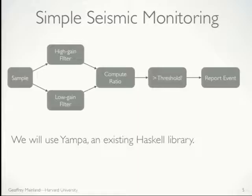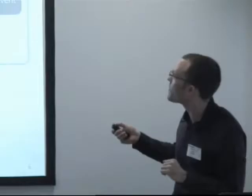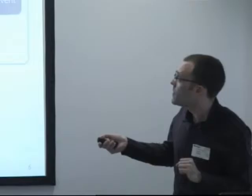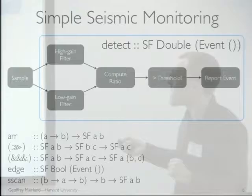I'm going to program this in Haskell, forgetting the constraints that we have on the devices in the volcano, and say in an ideal world, how can I program this at a very high level? I'm going to use an existing Haskell library that has nice facilities for signal processing. I'll write a function called detect. The type says it's going to be a signal function taking doubles from my seismometer and outputting impulse events. I'll implement two exponentially weighted moving averages with parameters alpha and beta for the high-gain and low-gain filters.